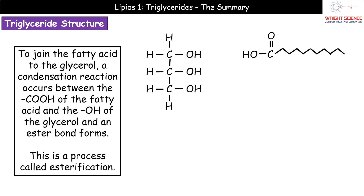So how do we actually make a triglyceride? We are joining fatty acids to glycerol, and if we're joining things we are talking about a condensation reaction. The condensation reaction is going to occur between the COOH of the fatty acid and the OH of our glycerol, and these two parts of our molecules react to form the all-important named ester bond.